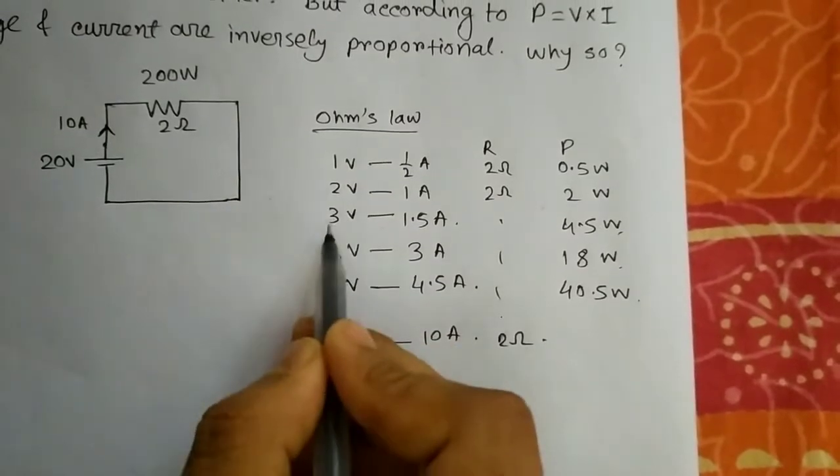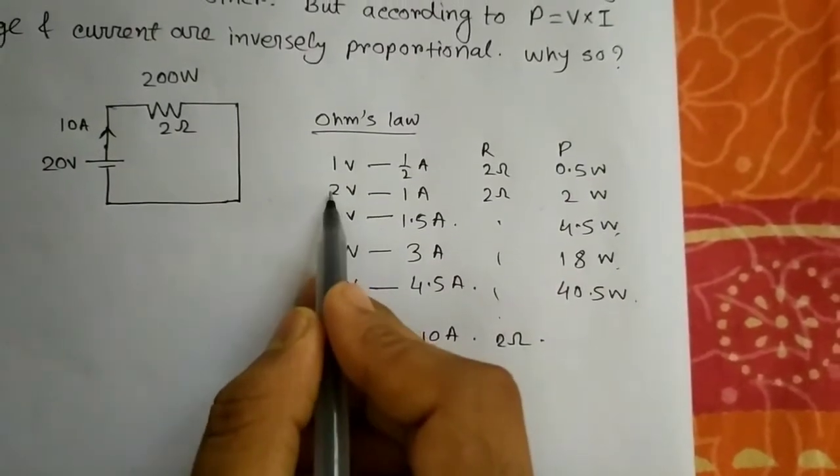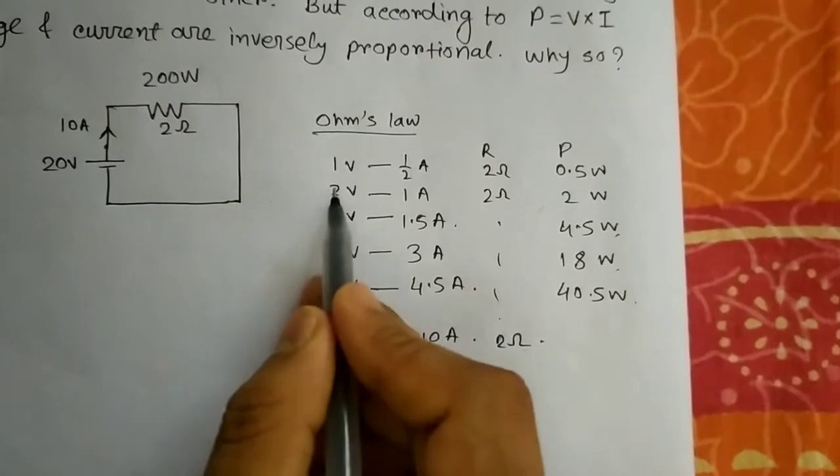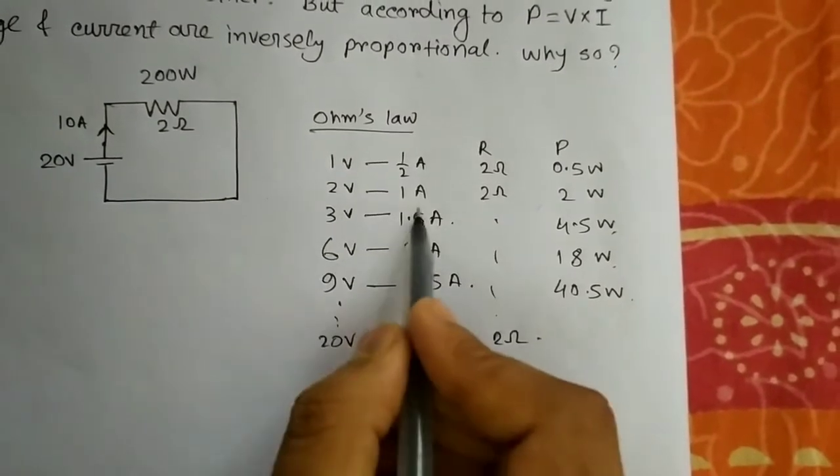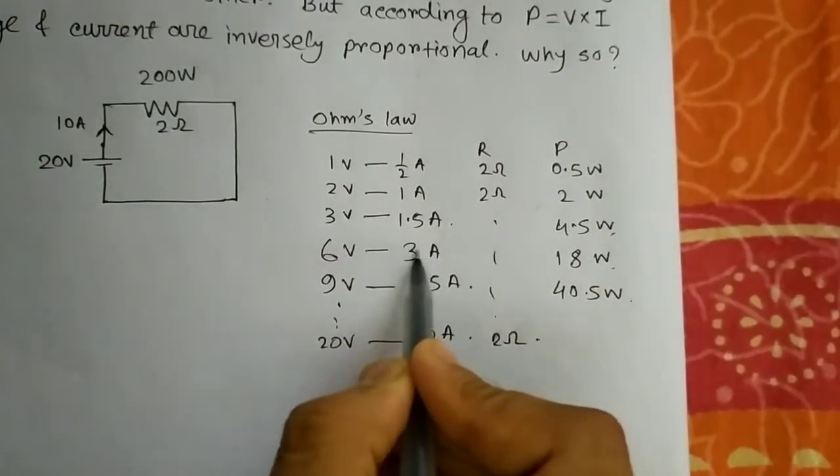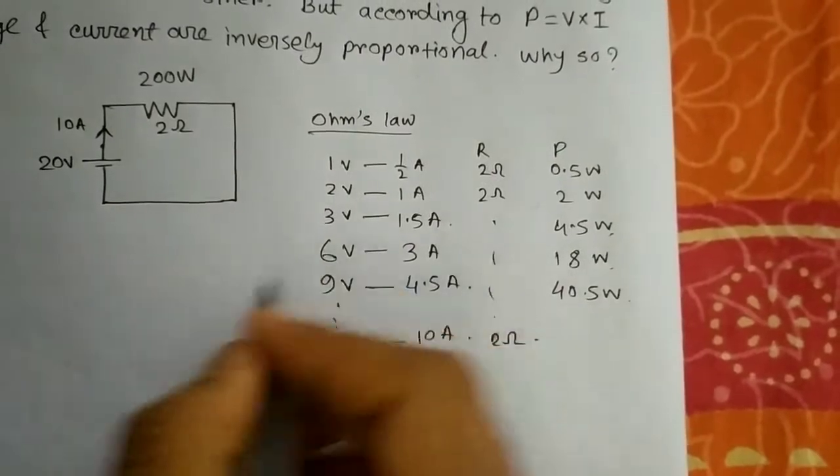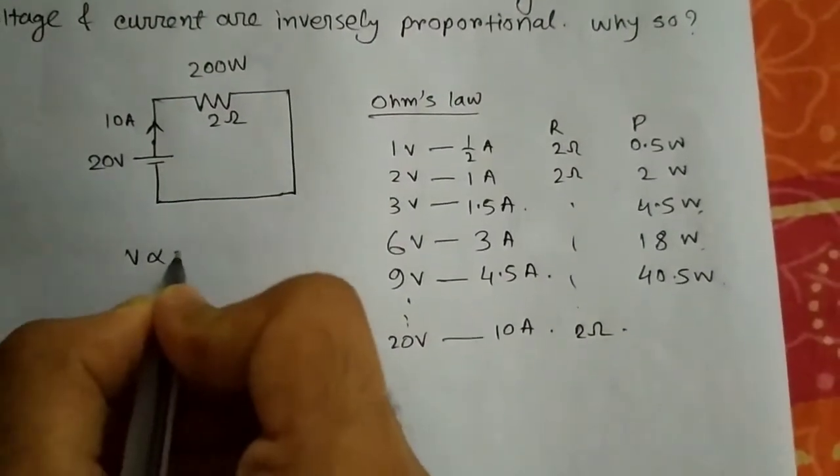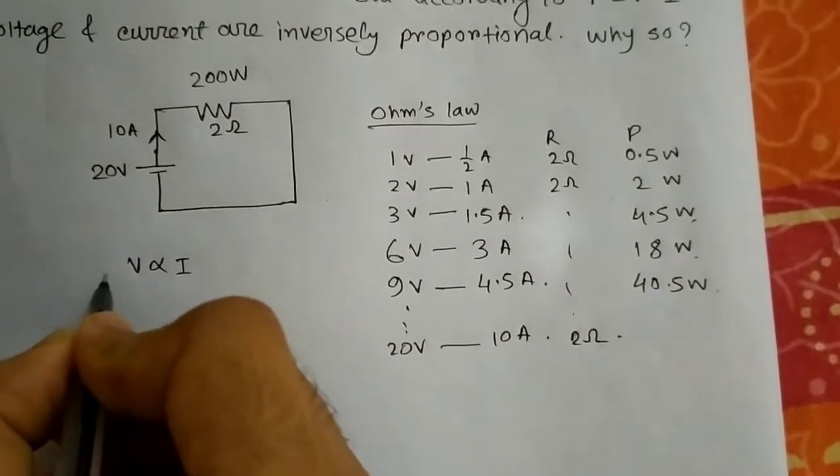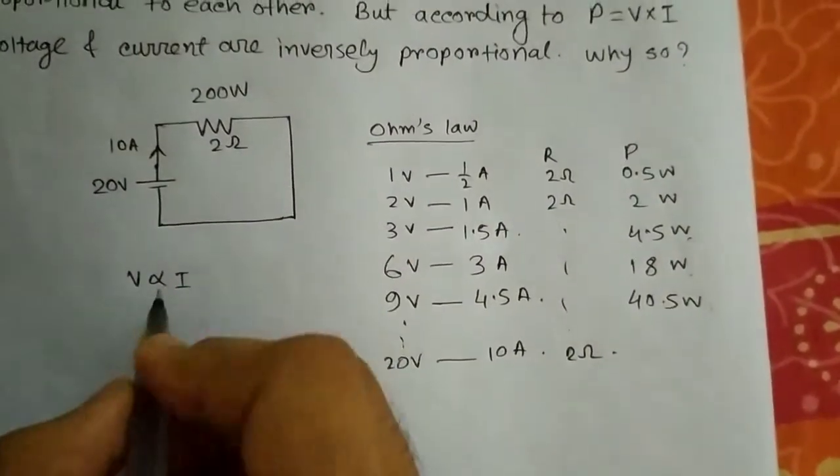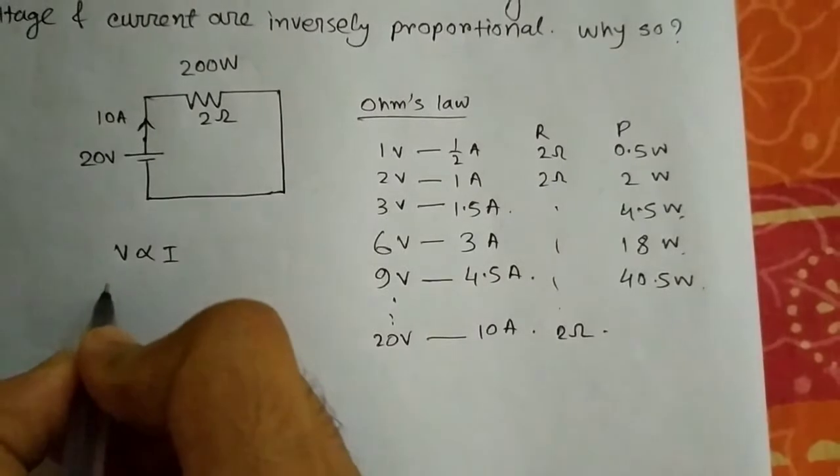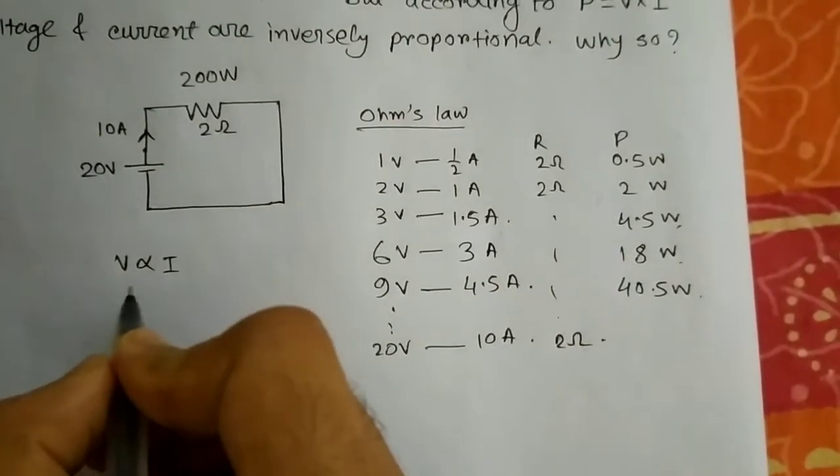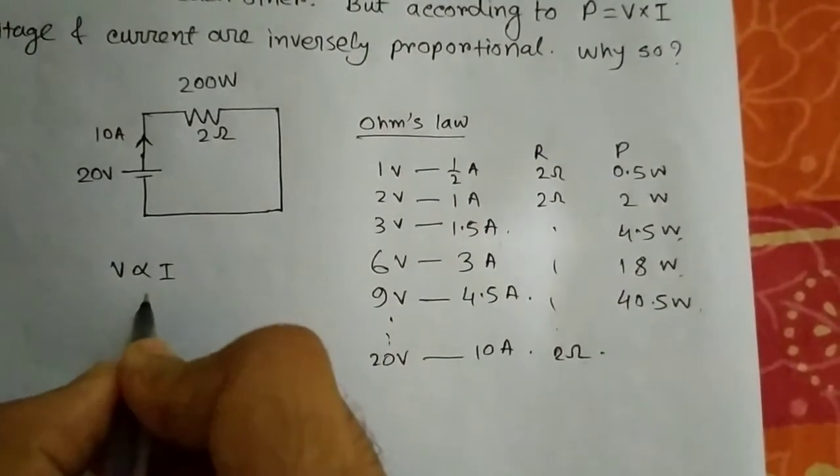Here you can see the voltage is increased from 2 to 6. The voltage is increased by 3 times, 2 into 3 equals 6. Here also you can see 1 into 3 equals 3 amperes. So this way we can see that voltage varies current. With the increase of voltage, the current will also increase in the same number of times.